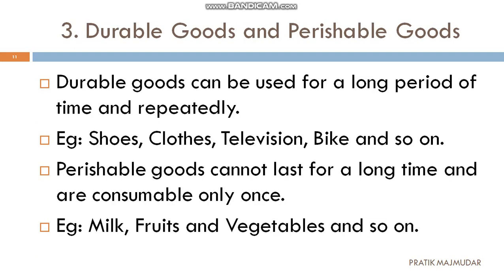Third type is durable goods and perishable goods. Durable goods are those which are used for a longer period. For example, if you have purchased a shoe, you are not wearing it just one time and throwing it — you are using it for multiple times.